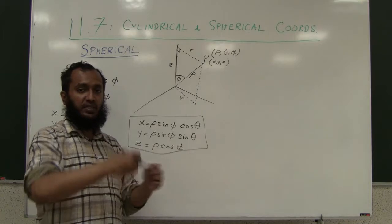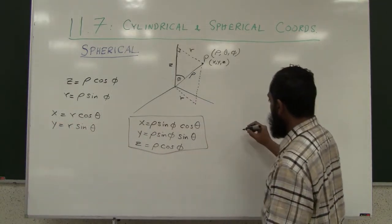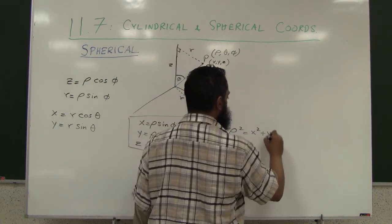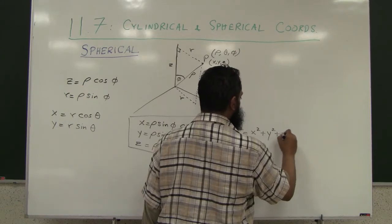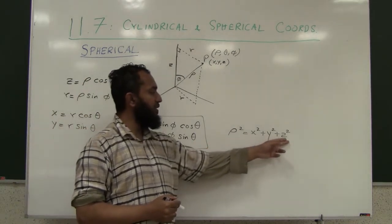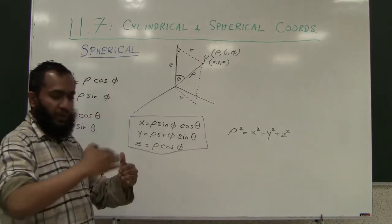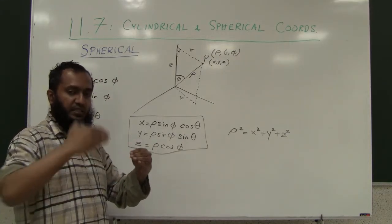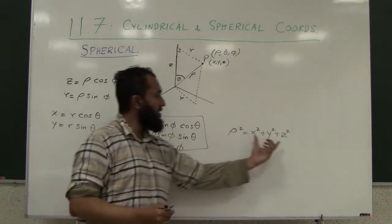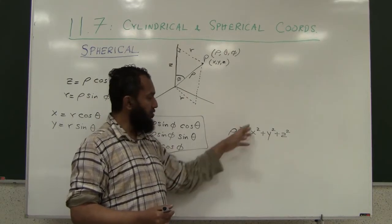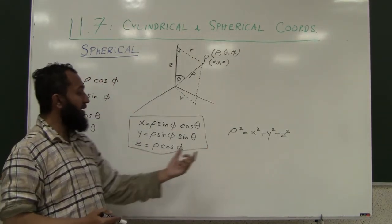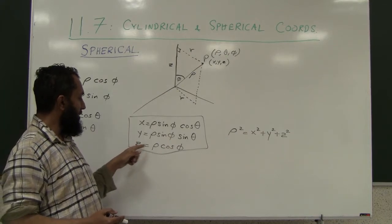This gives you the relationship: if you already know the spherical coordinates of a point, you can extract the XYZ coordinates. On the other hand, if you're given XYZ coordinates and want to go to spherical coordinates, the fundamental relationship is rho squared equals X squared plus Y squared plus Z squared, using the distance formula applied one dimension at a time.